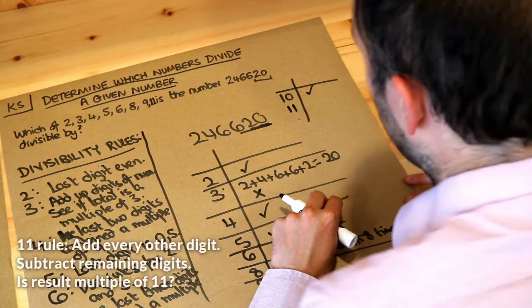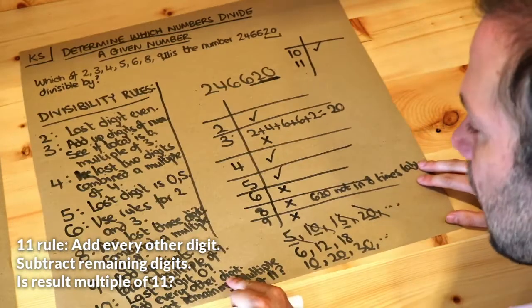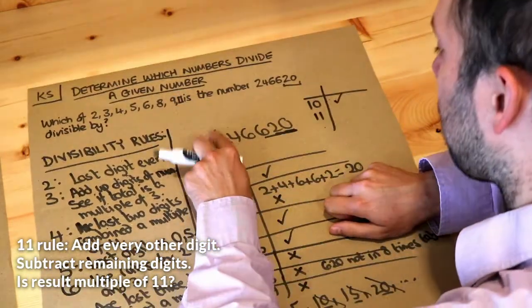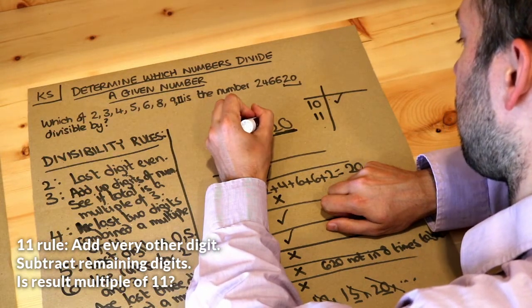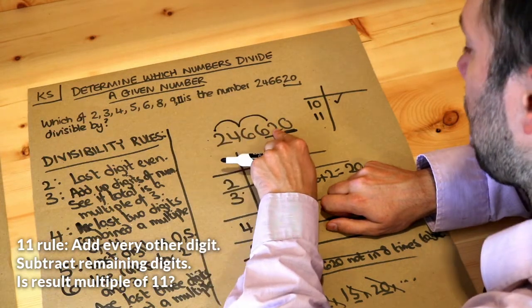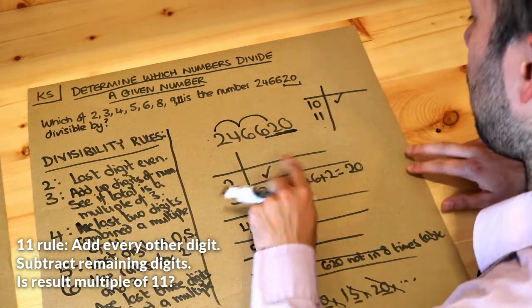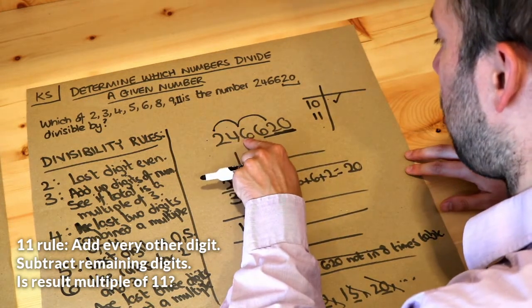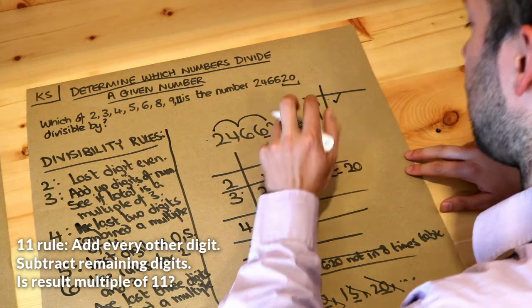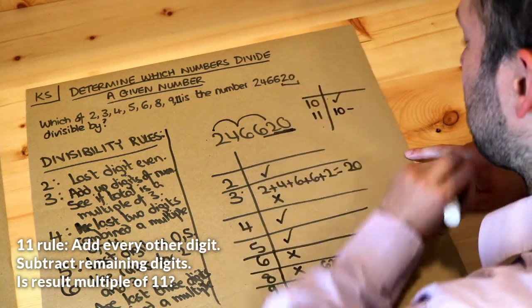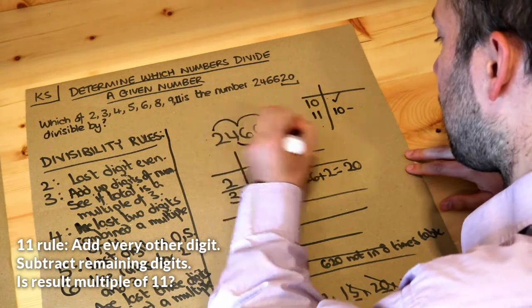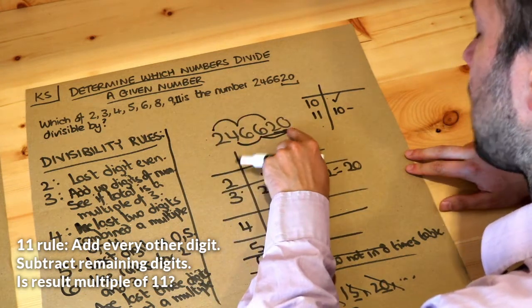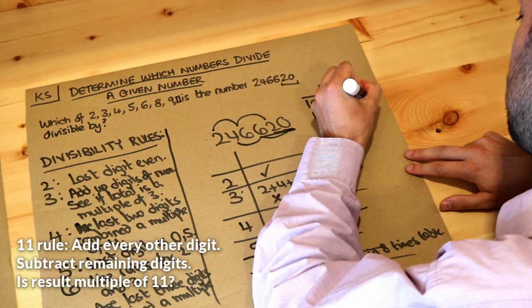Now the latter one is the most complicated. Do you remember I said you add every other digit? So we start from the first digit. We skip one each time and add every other digit. So it's just the first, the third and the fifth, seventh, etc. So if we add those together, 2 plus 6 plus 2 is 10, and then we subtract the remaining digits. So the other digits are 4, 6 and 0. They add up to 10. So it's 10 minus 10 which is 0.